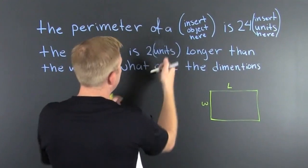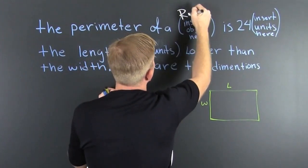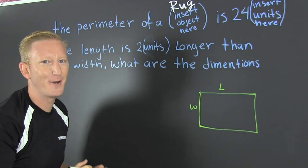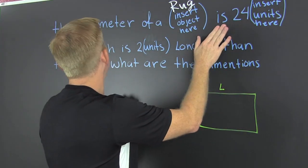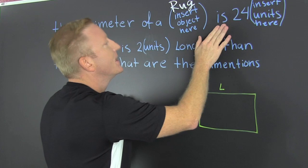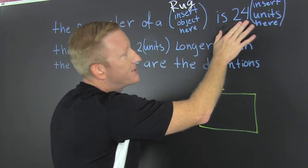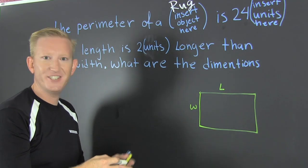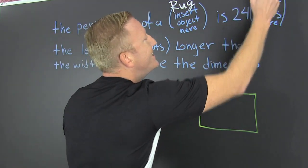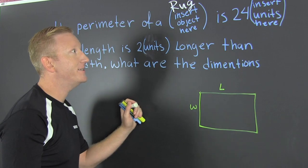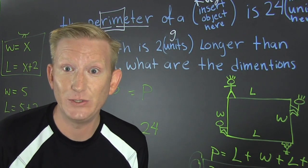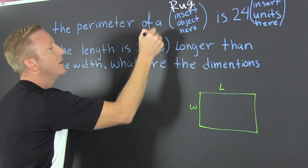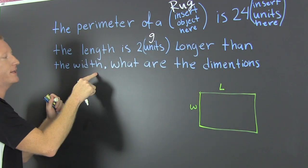The perimeter of a... let's go with rug. I think that's how you spell rug. I picked a simple word because I don't spell real well. So then, the perimeter is 24 units. It could be any units - feet, inches. I'm just gonna choose Gs. What up, G? G units! Alright, the length is two Gs longer than the width. We want to know what are the dimensions.